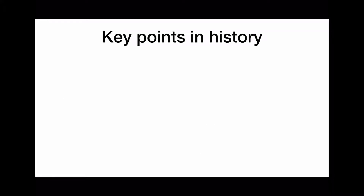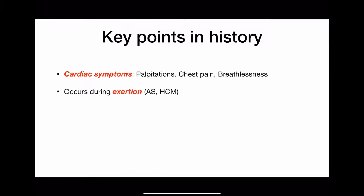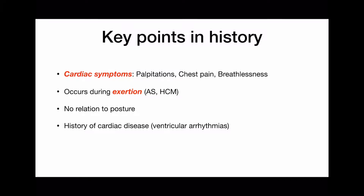Further structural causes include acute myocardial infarction, hypertrophic cardiomyopathy, atrial myxoma, acute aortic dissection, pericardial disease or tamponade, pulmonary embolus, and pulmonary hypertension. In history, always ask about palpitations, chest pain, and breathlessness. Syncope occurring during exertion is a critical clue for cardiac origin. Also ask about history of cardiac diseases and family history of sudden death, which can indicate long QT syndrome.